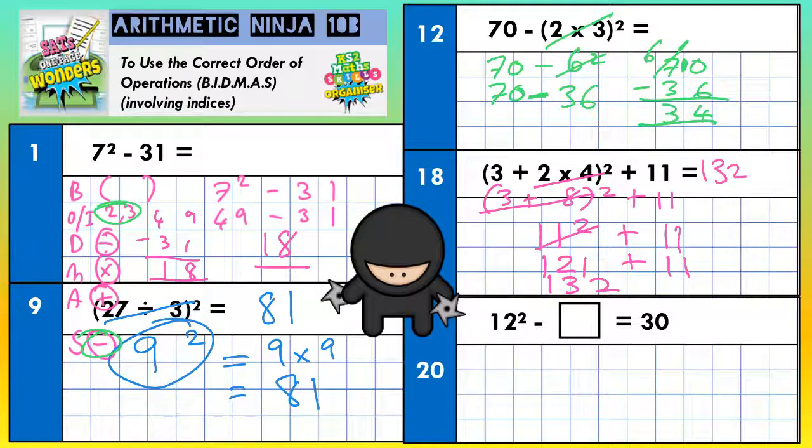Question 20 is the last one. We need to figure out what box goes in here so that when we take it off 12 squared we get 30. Well, the first thing we need to do is figure out what 12 squared is. 12 squared is 12 times 12, which is right in the corner of your grid. So that's going to be 144. So that's 144 take away something is 30.